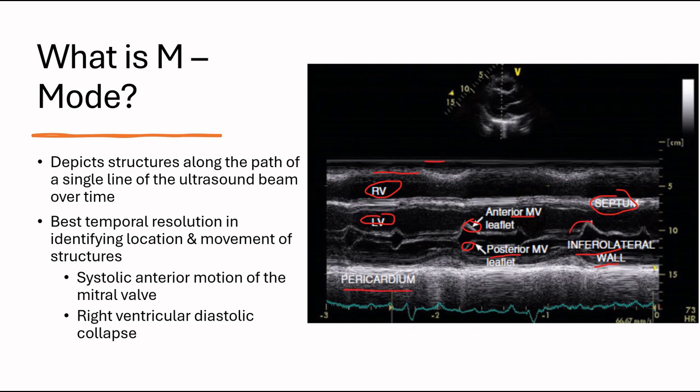So in diastole, these mitral valves open and get close, and the anterior leaflet gets closer to the septum, and in systole the valves close, such as so.